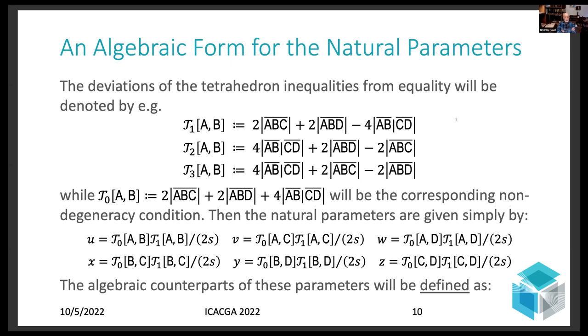So what you can then show via some straightforward trigonometry combined with geometric algebra, that the natural parameters are given algebraically by these expressions shown down here, where you take the sum of the deviations of the tetrahedron inequality from saturation, you take the product with the non-degeneracy factor, and you divide by, in this case, four times the exterior surface area. Okay, so that's very good. It's a nice, simple, closed-form formula.